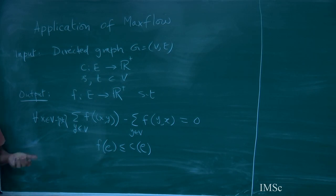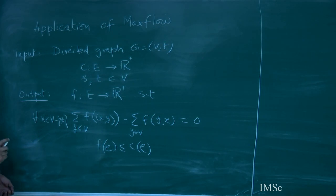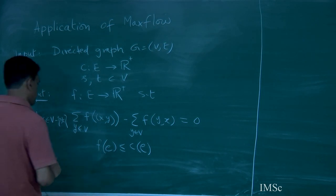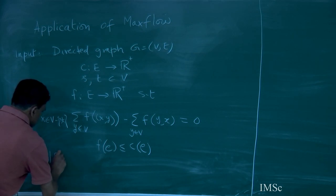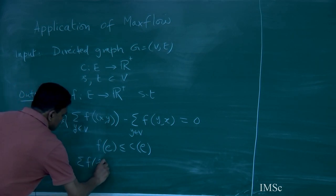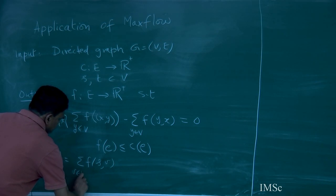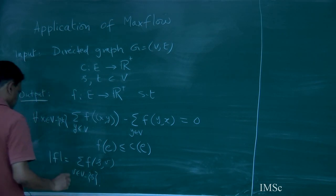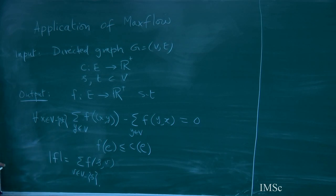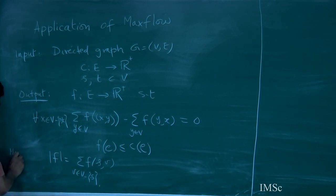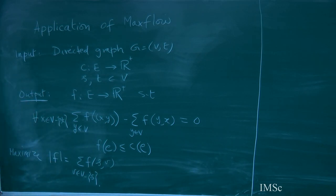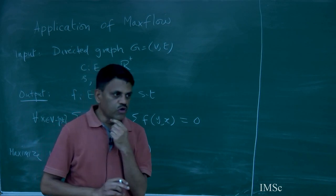And you want to maximize the flow. The value of the flow is summation f(s,v) — the flow out of s. And because of the conservation constraints, you can show it is also the flow into t. So you want to maximize this number. This is the max flow problem, and you have seen several algorithms for it.